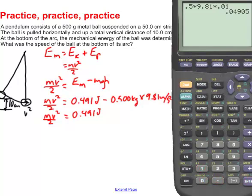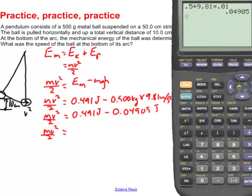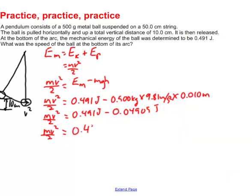So the kinetic energy equals 0.491 joules minus 0.04905 joules, which gives a difference of 0.44195 joules. We're still trying to find velocity.